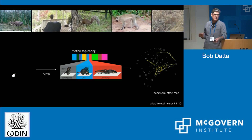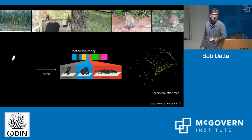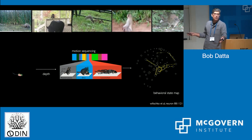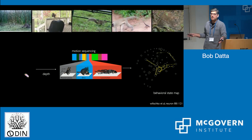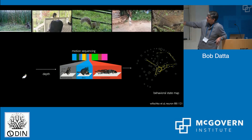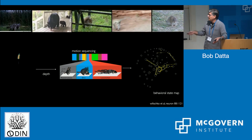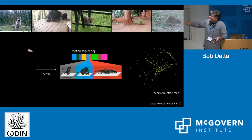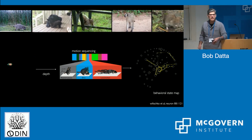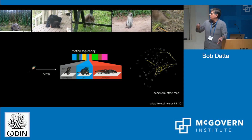It learns in a given context how many behavioral syllables there are. In a typical open field experiment, it'll discover 40 or 50 of them. Typically they're three, four, five hundred millisecond long stereotyped, repeatedly used motifs of three-dimensional action — like a rear, a turn to the right, or a step to the left. For a given experiment, MoSeq will tell us the identity of these syllables, how many they are, and of course the order in which they occur, allowing us to synthesize all of that information into a behavioral statement that captures the moment-to-moment behavioral choices that animals make as they confront the natural world.